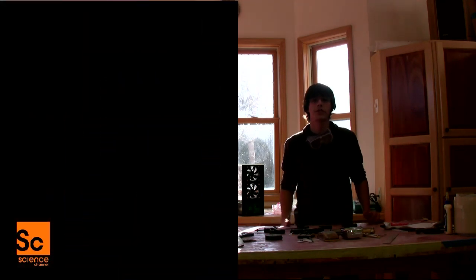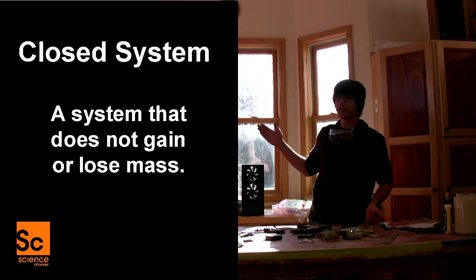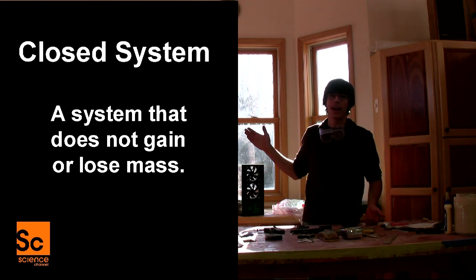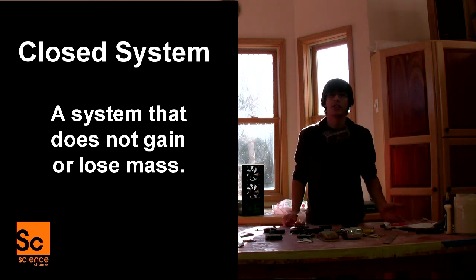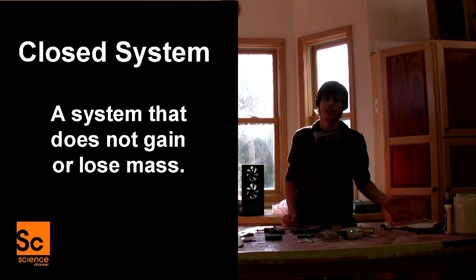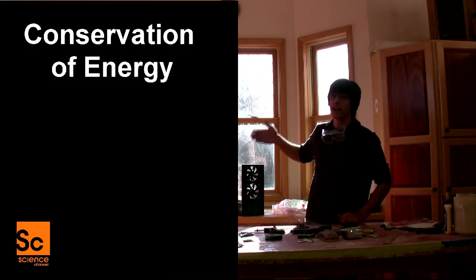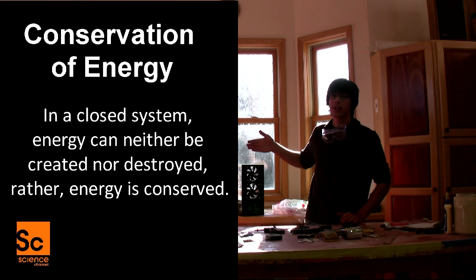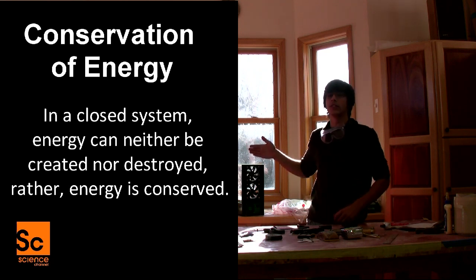You might wonder what a closed system is. A closed system is a system that does not gain or lose mass. Since mass is energy, therefore you would not be adding or taking away energy. Therefore, the conservation of energy is defined as: in a closed system, energy can neither be created nor destroyed — rather, energy is conserved.